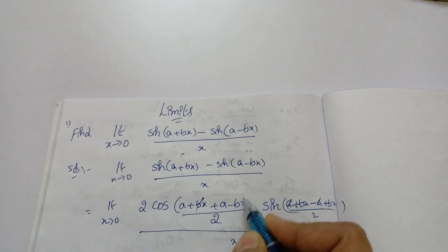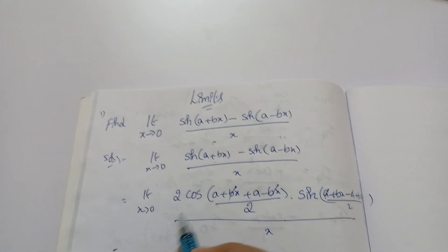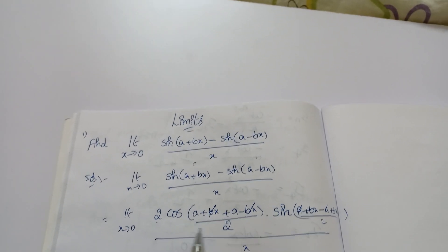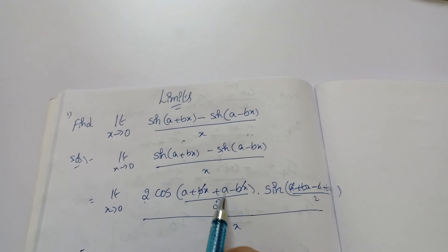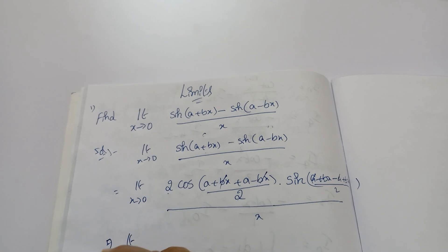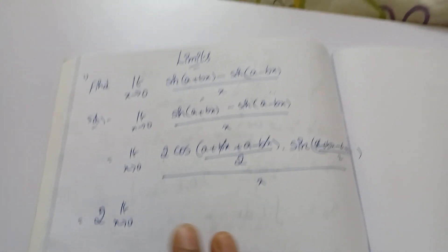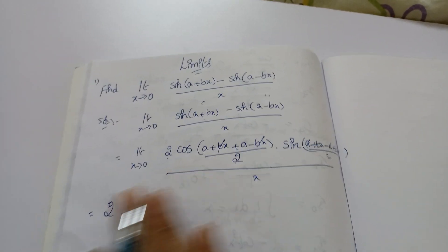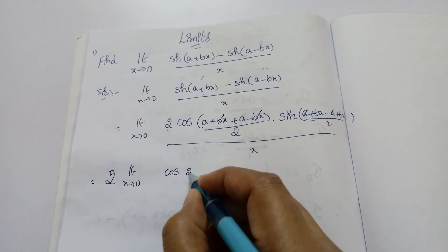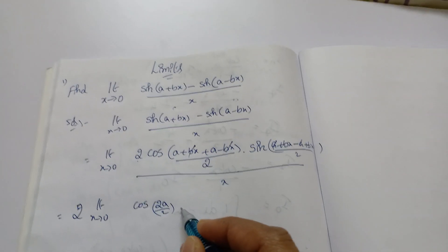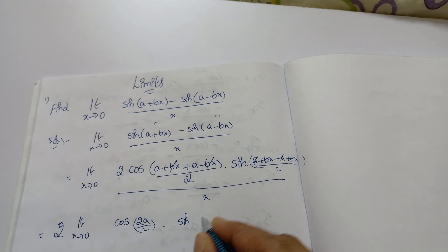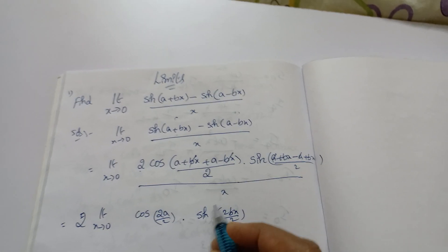Now cancel terms. The 'a' terms cancel, and bx also cancels in the numerator of the cosine part. Don't cancel the coefficient inside the cosine angle — this is the angle, that is the coefficient. Limit x tends to 0. You can write 2 outside, no problem. Now 2a/2 simplifies, and you have 2bx/2 inside the sine, divided by x.